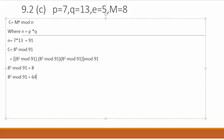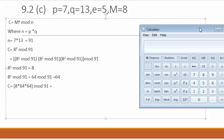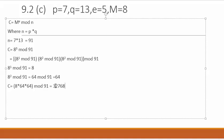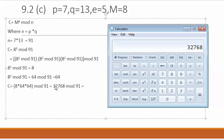Now we are going to put these values back in the above equation. We have C = 8 times 64 times 64 mod 91. Now I'm going to open the calculator. 8 into 64 into 64, that is 32768 mod 91.